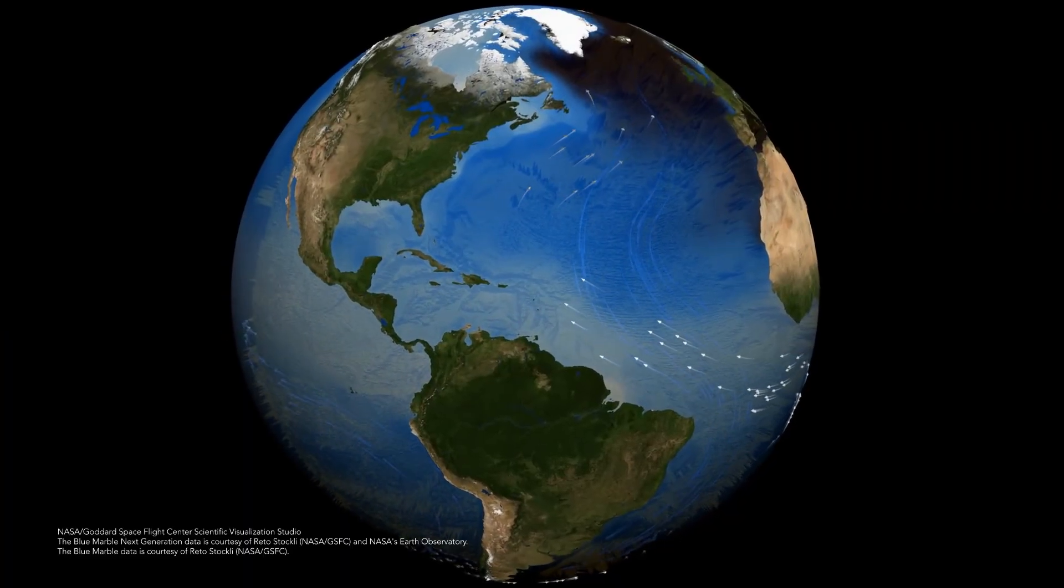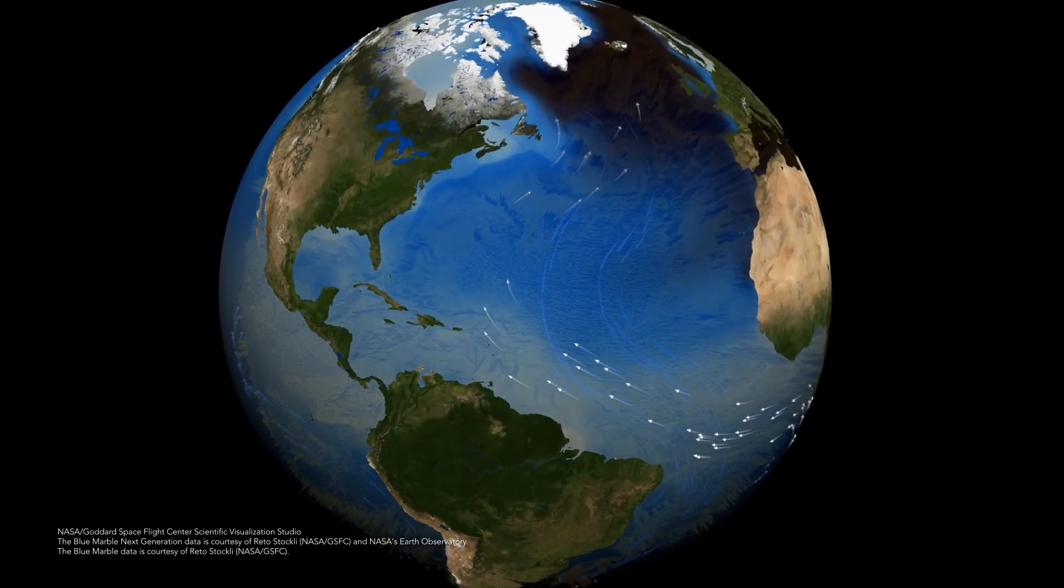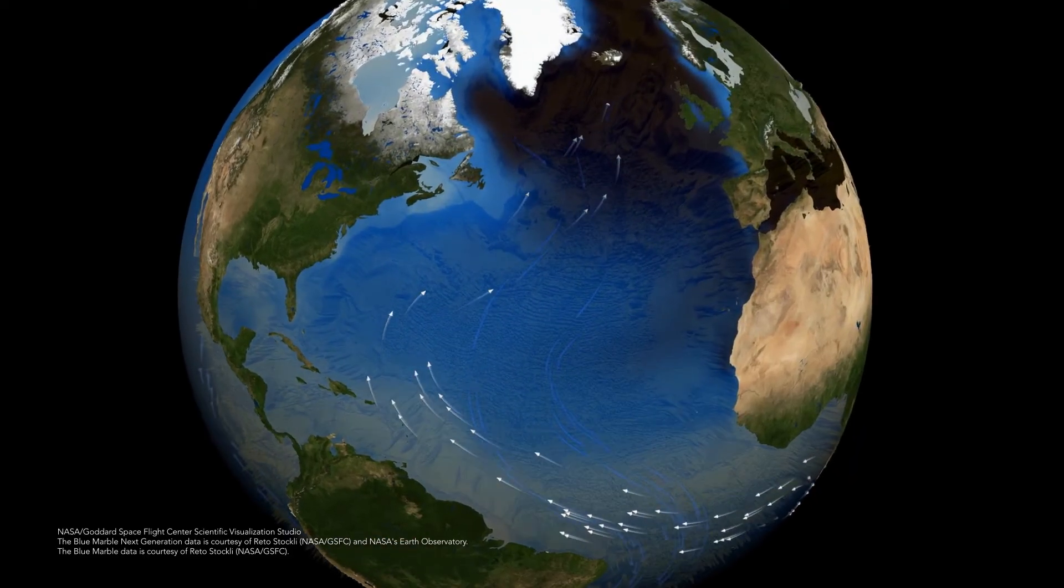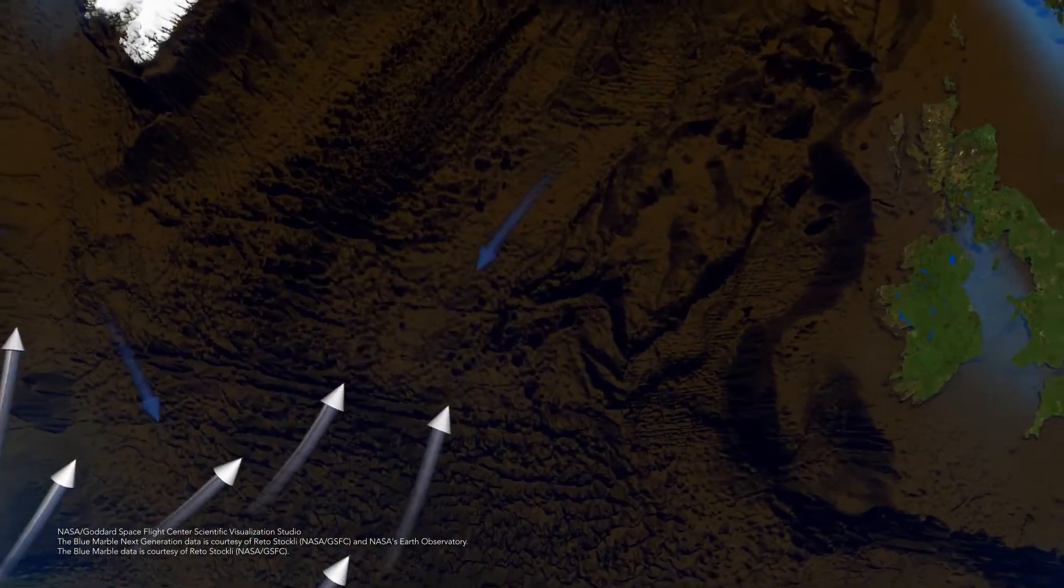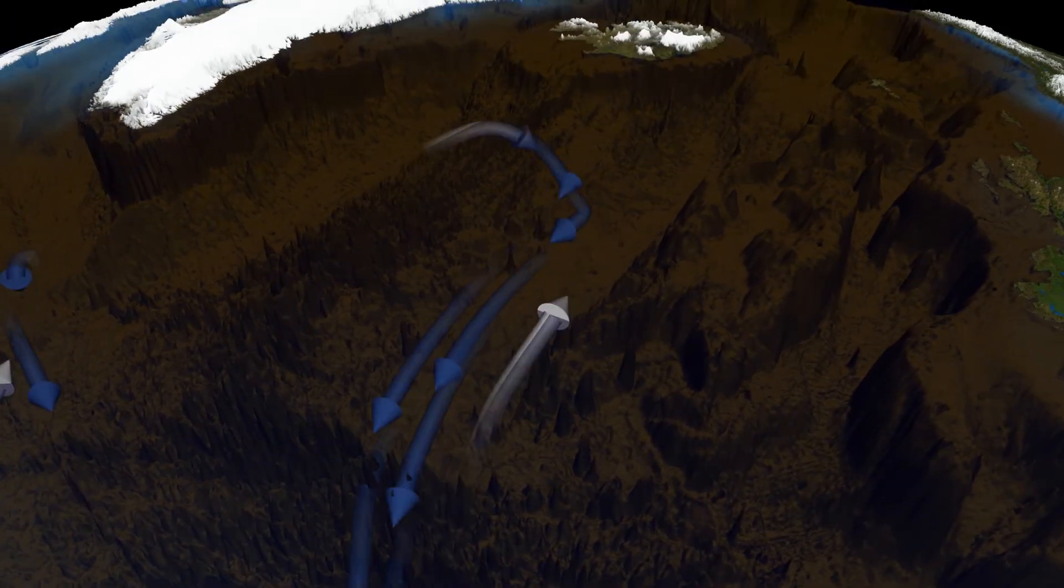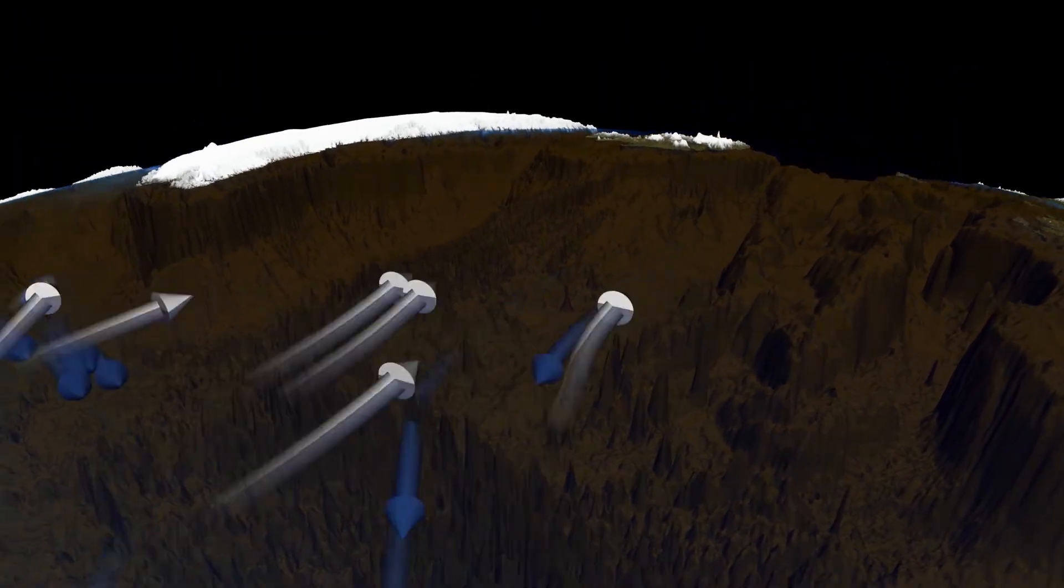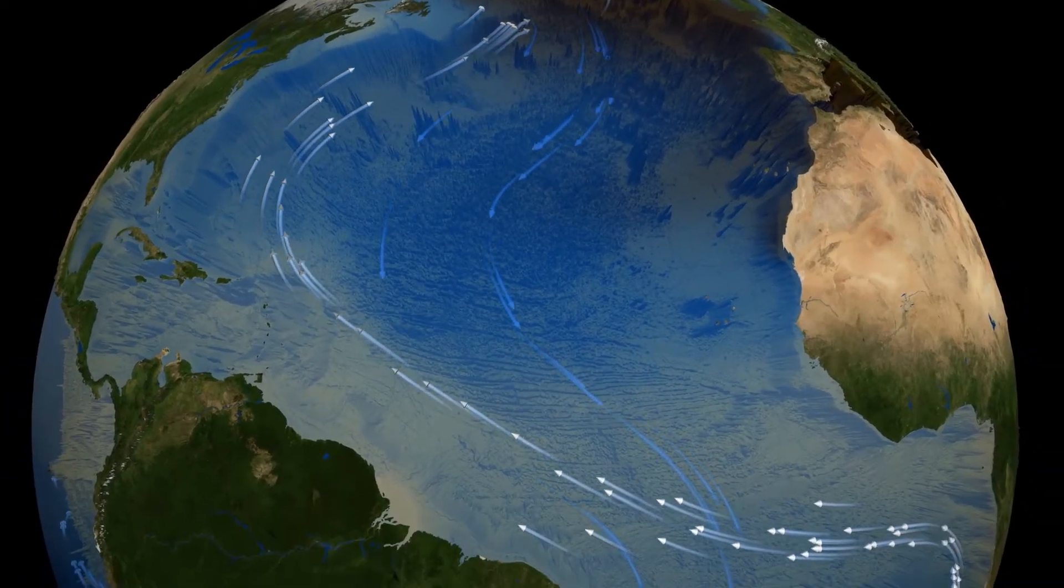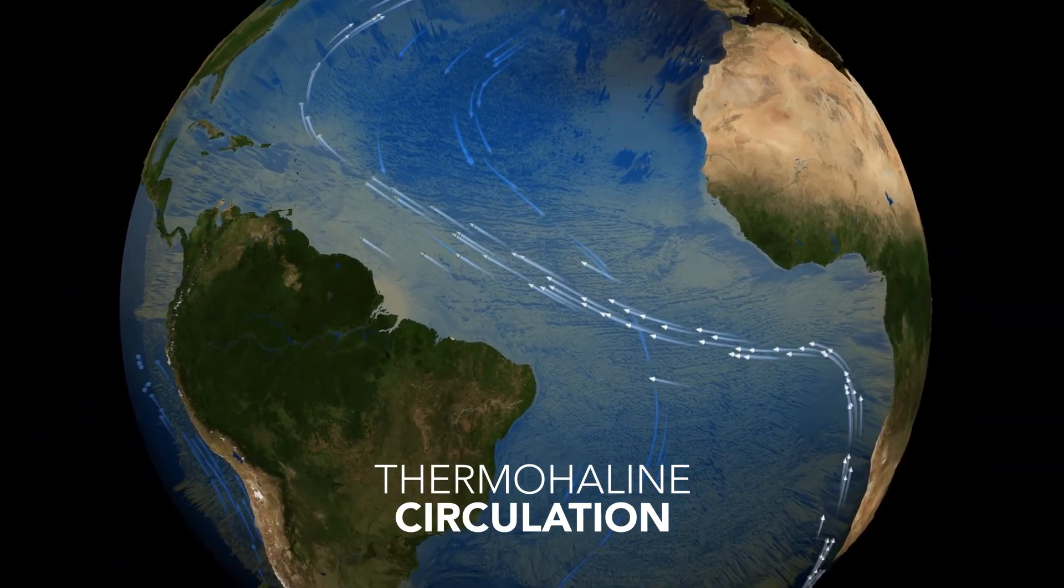As water moves towards the poles, it cools, and becomes more saline as the water freezes. This cold, salty water is very dense, and so it sinks near the poles. This deep water moves along the bottom of the ocean towards the equator. This ocean circulation is known as the thermohaline circulation.